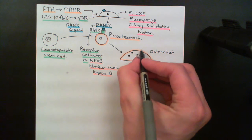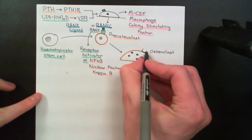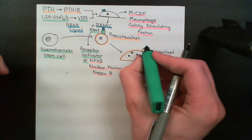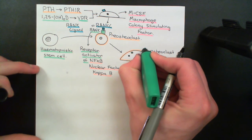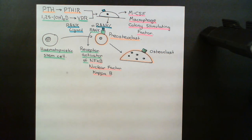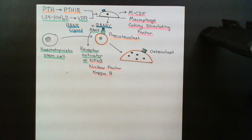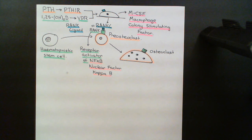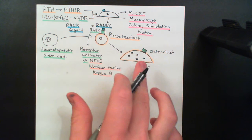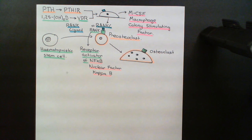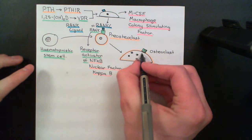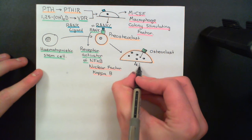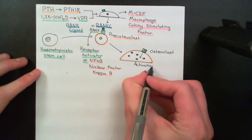In addition, the actual osteoclasts themselves have RANK proteins on their surface. The RANKL produced by osteoblasts also stimulates the RANK proteins on the surface of existing osteoclasts, triggering those osteoclasts to increase their activity. So not only are more osteoclasts formed, but the existing osteoclasts are also activated.